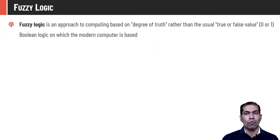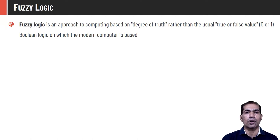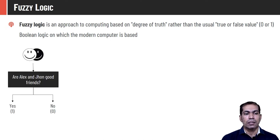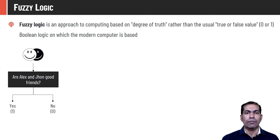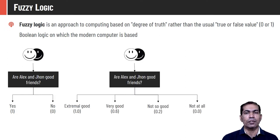Fuzzy logic is an approach to computing based on degrees of truth, quite different from traditional binary logic (0 or 1). If I ask whether Alex and John are good friends, traditional logic has only two possibilities: yes or no. But with fuzzy logic, there could be multiple answers — someone very close to them might say they are good friends (truth value 1), while others may say they are somewhat friends, assigning different degrees of membership.